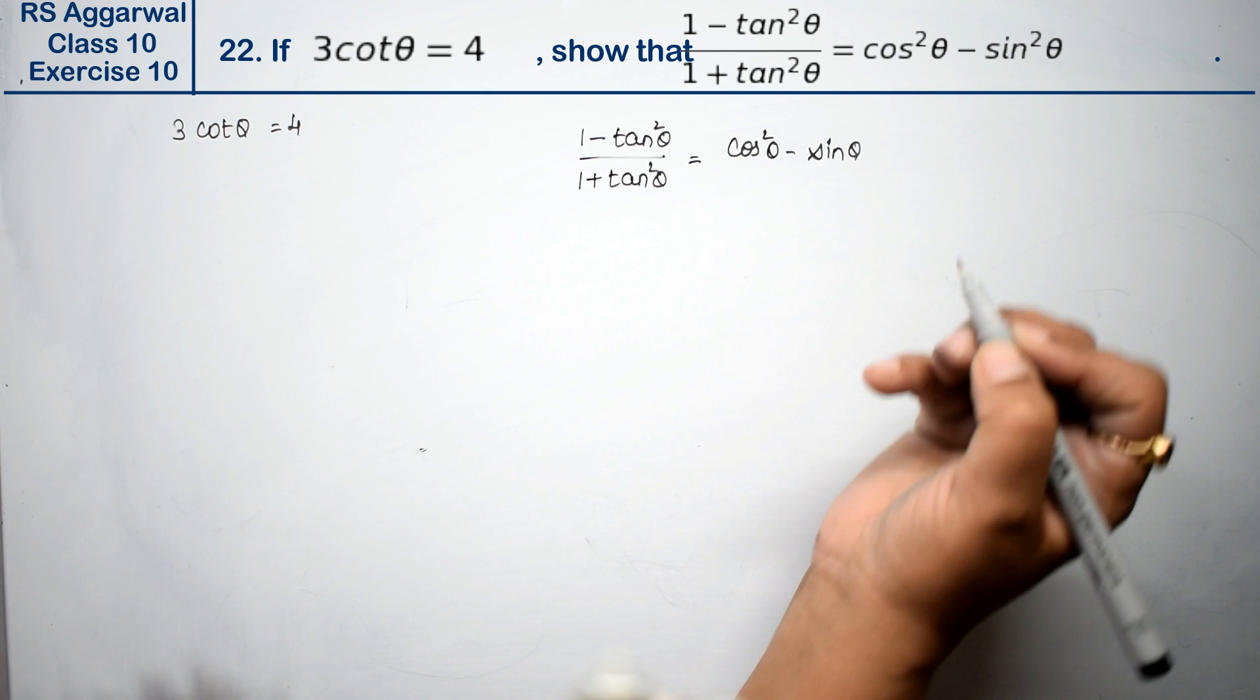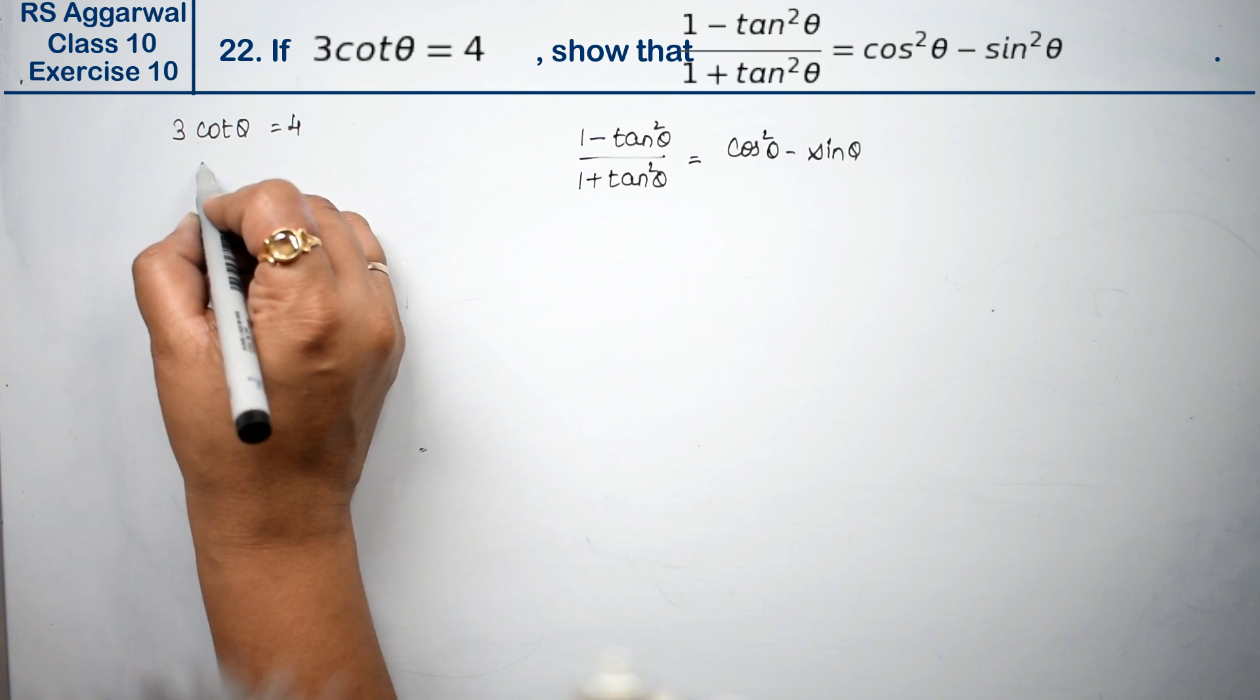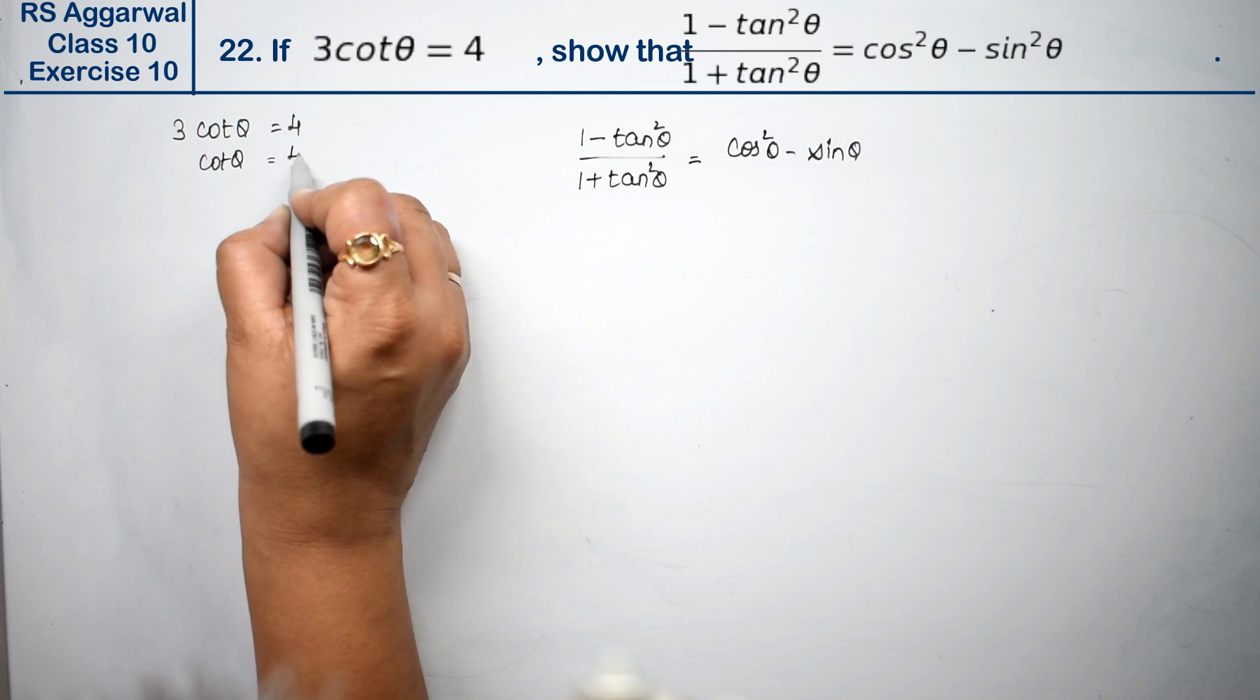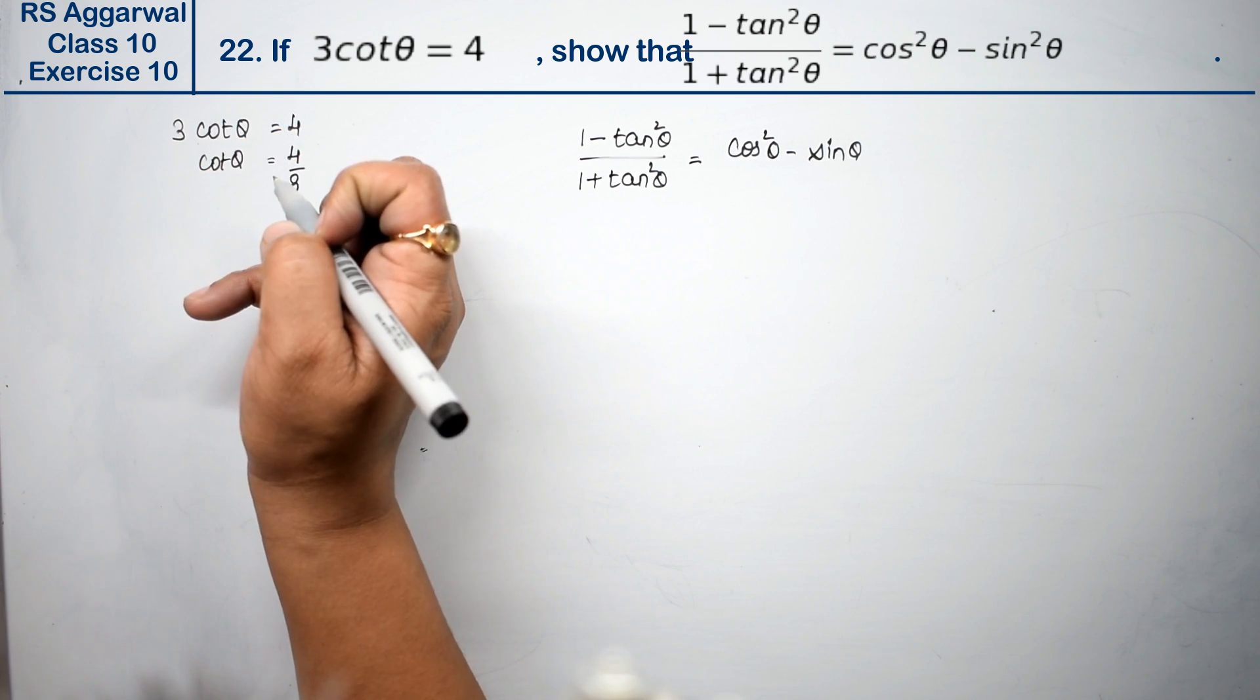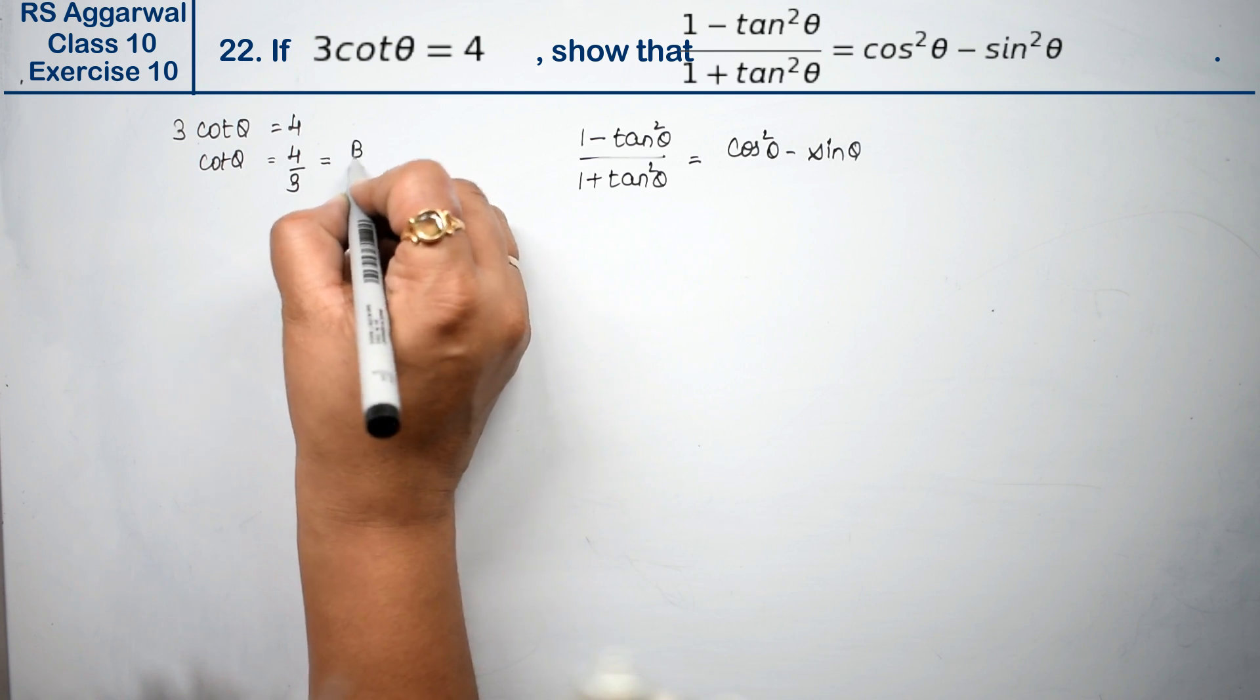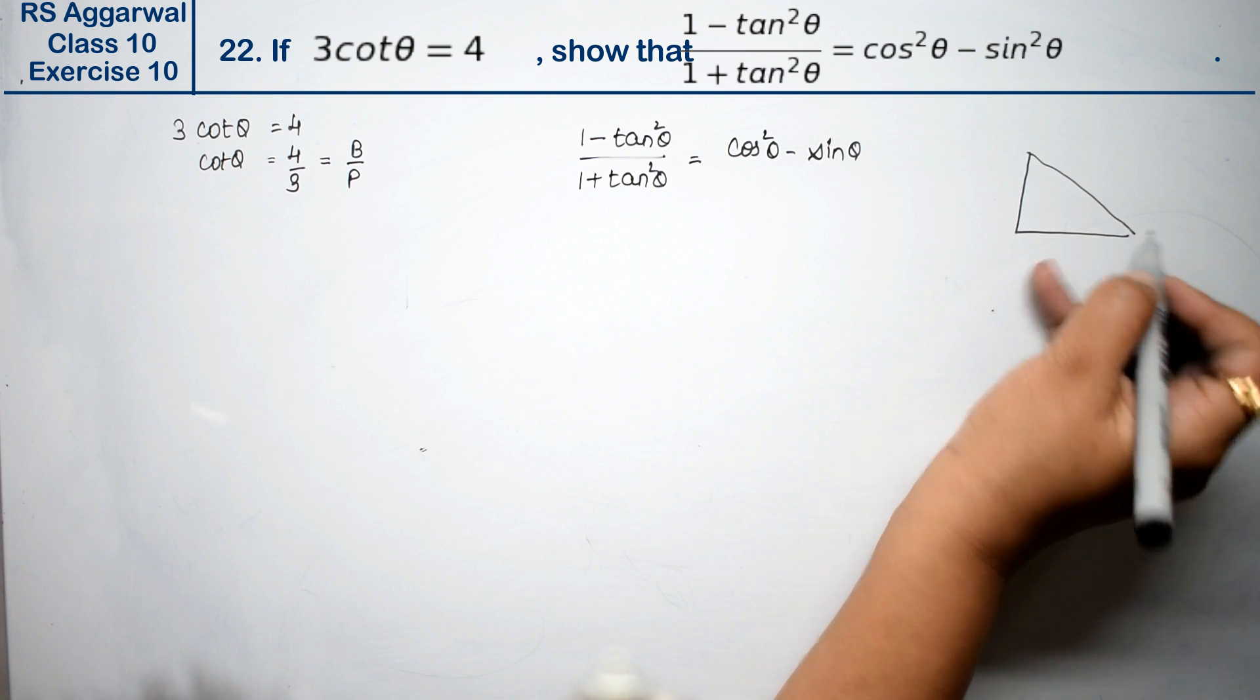Right, so how will we do this? We have cot θ value given as 4, sorry, 3cot θ value given as 4. So we have to find cot θ value which will be 4 upon 3. The formula for cot θ is base upon perpendicular.